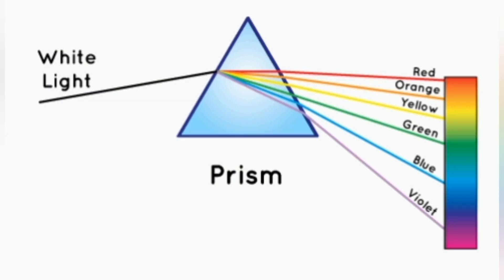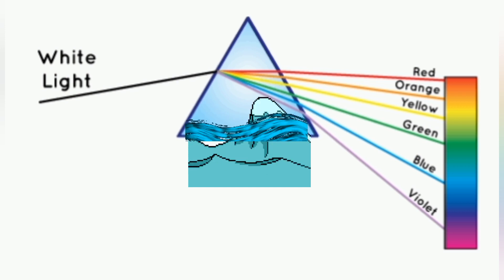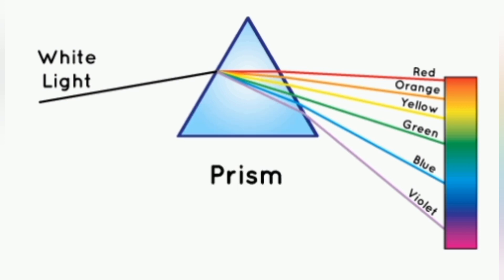Rayleigh Scattering refers to the spreading of electromagnetic radiation, of which light is formed, by particles of a much smaller wavelength. Sunlight is scattered by the particles of the atmosphere, and what comes through down to Earth is called diffuse sky radiation.